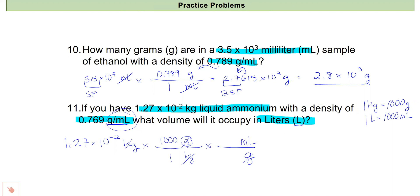But I can get this into liters with a metric conversion. So I will put milliliters on the bottom of my last conversion so they cancel, and liters on top. 1 liter is equal to 1,000 milliliters. 0.769 grams is equal to 1 milliliter. And 1,000 grams is equal to 1 kilogram.